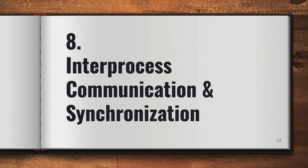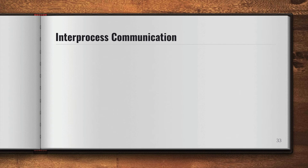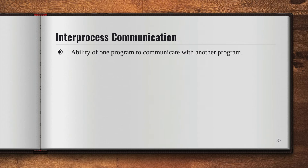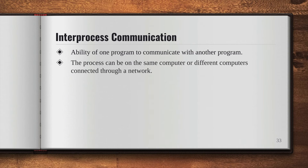Hello everyone. In this video we're going to talk about inter-process communication and synchronization. So what is inter-process communication? Inter-process communication is the ability of one program to communicate with another program. The processes can be on the same computer or different computers connected through a network.